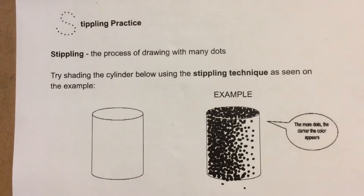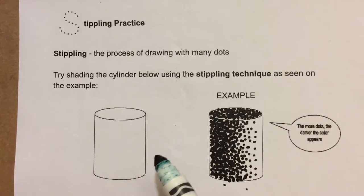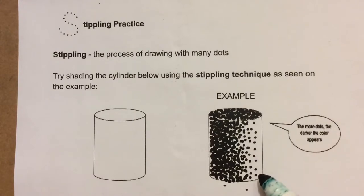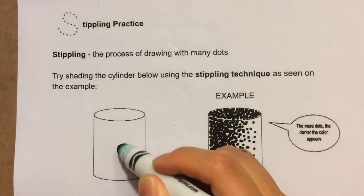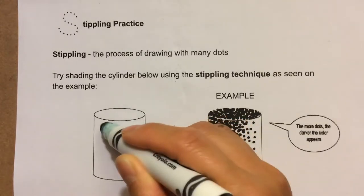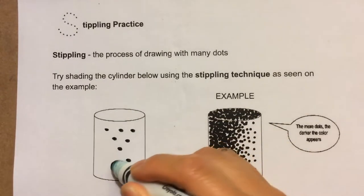So in following this example, I'm going to start really light first. I'm going to avoid the side where the light is hitting the cylinder and just start making dots in the middle.